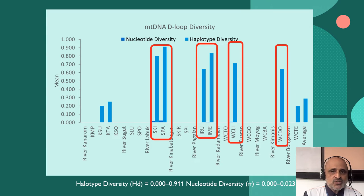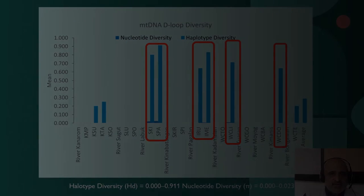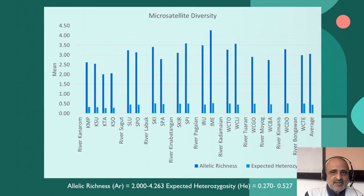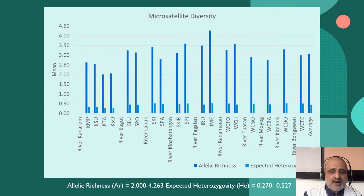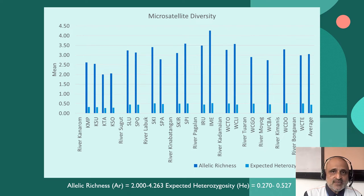In terms of microsatellite diversity, there was a high degree of allelic richness and private alleles were also observed. The expected heterozygosity was relatively low, but the richness was very high, which means evolutionary forces are driving the fixation and evolution of new alleles within the subpopulations.